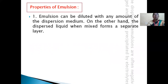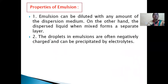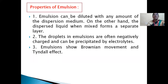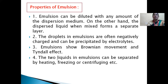Properties of emulsion: Number one, emulsion can be diluted with any amount of the dispersion medium; the dispersed liquid when mixed forms a separate layer. Second, the droplets in emulsions are negatively charged and can be precipitated by electrolytes. Third, emulsion shows Brownian movement and Tyndall effect. Fourth, the two liquids in emulsion can be separated by heating, freezing, or centrifuging.